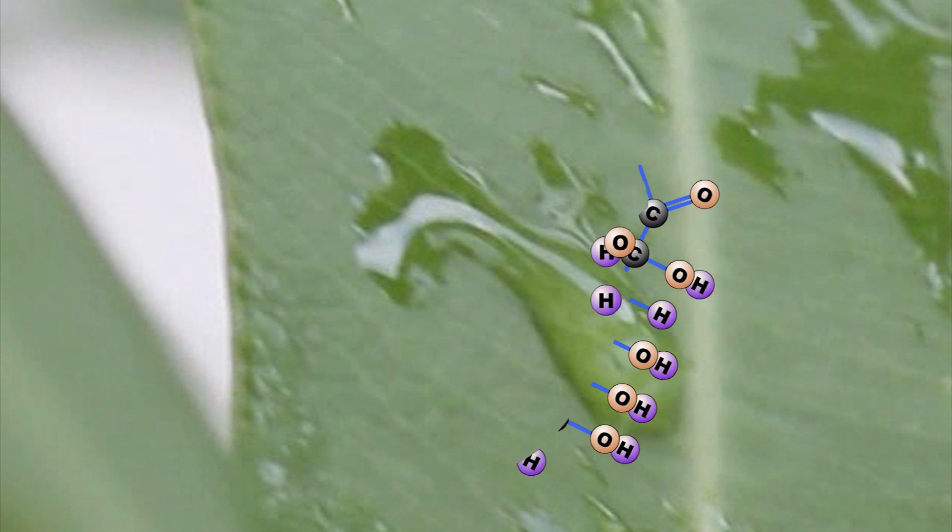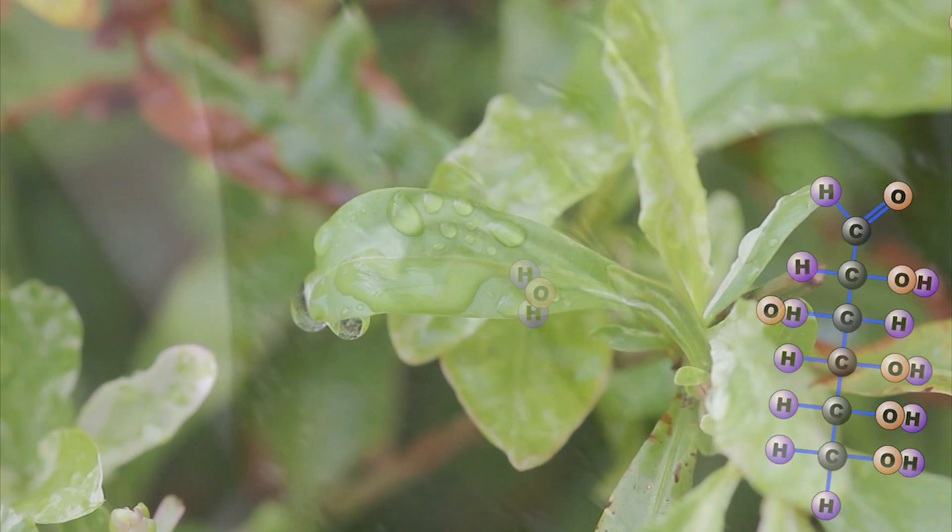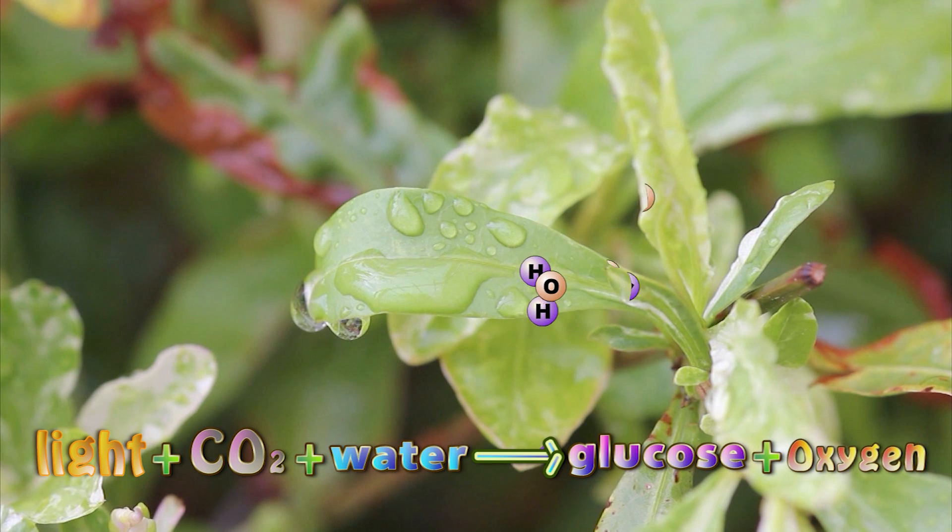The sun's energy is used to split off water's hydrogen from its oxygen. This hydrogen is then combined with CO2 to form glucose, and the oxygen is released back into the atmosphere. Let's be absolutely clear. Sunlight plus carbon dioxide plus water gives glucose plus oxygen.